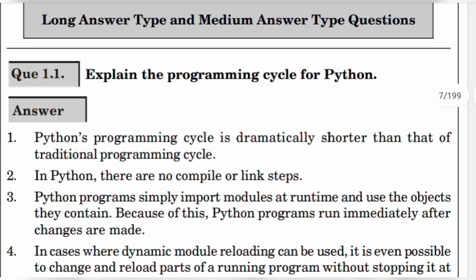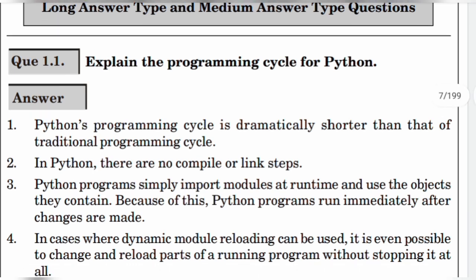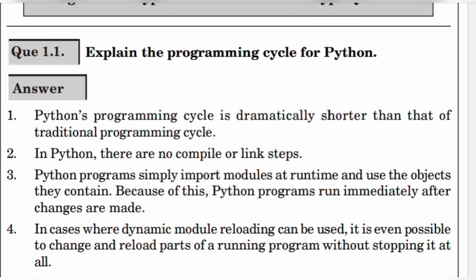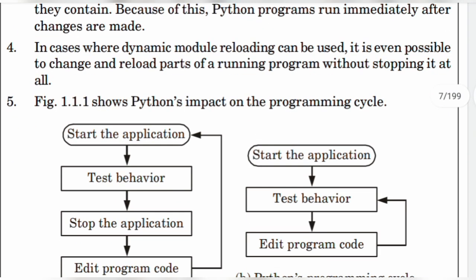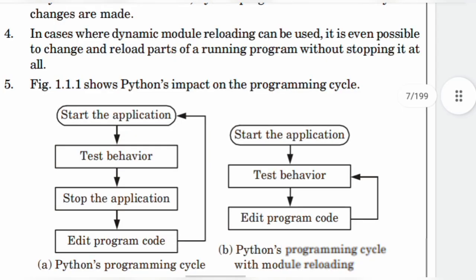The answer is that the Python programming cycle is dramatically shorter than that of the traditional programming cycle. In Python there are no compile or link steps. Python programs simply import modules at runtime and use the objects they contain. Because of this, Python programs run immediately after changes are made. In cases where dynamic module reloading can be used, it is even possible to change and reload parts of a running program without stopping it at all. In this figure you can see Python's impact on the programming cycle.